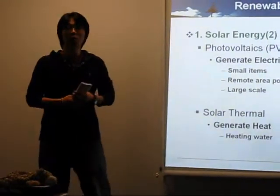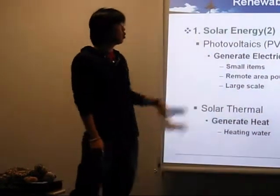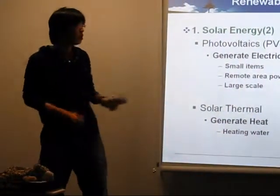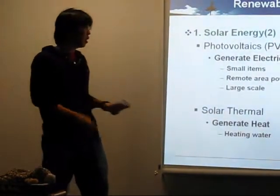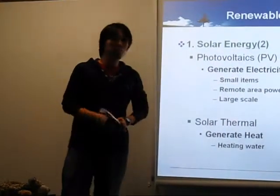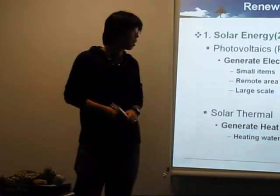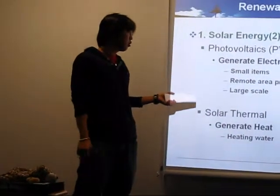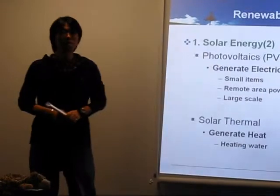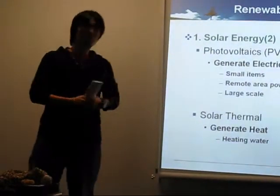So there are three main ways we can use solar energy with photovoltaics. The first one is small items such as calculators and watches. Also, for remote area power supplies, such as telephones and space satellites. And lastly, it is used in large scale supplying electricity through energy authorities.